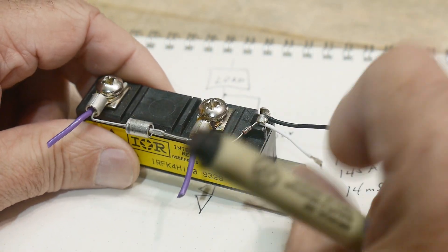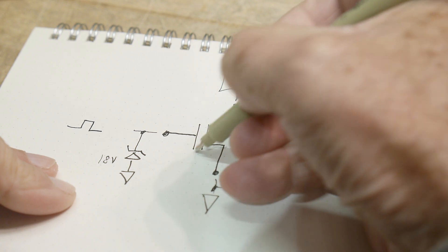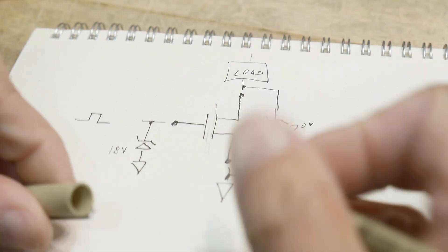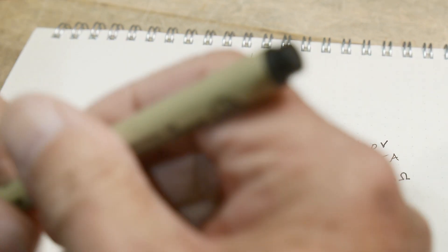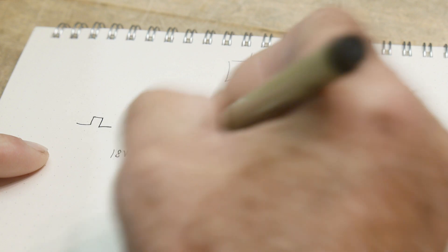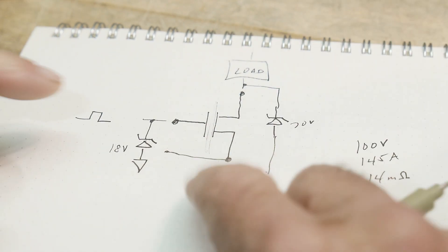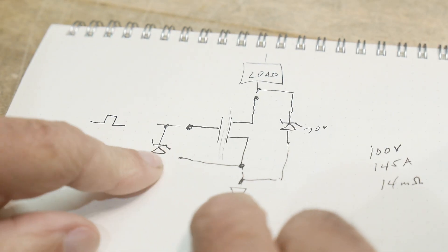And the cool thing about these also is the gate is isolated. Okay. There's actually an insulator here on the gate. And so whatever you're doing on the output, the gate is isolated. And there's actually a separate little separate ground here too. So there's two ways to get to the drain.